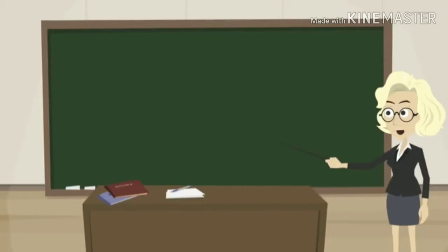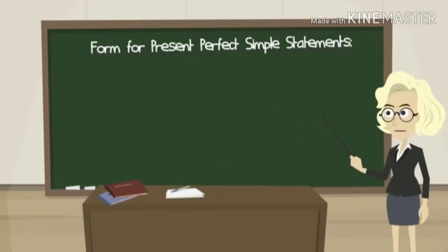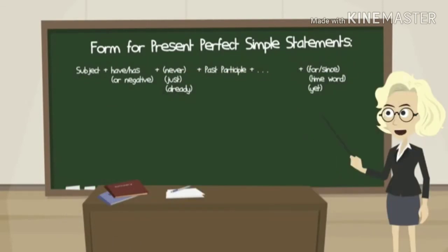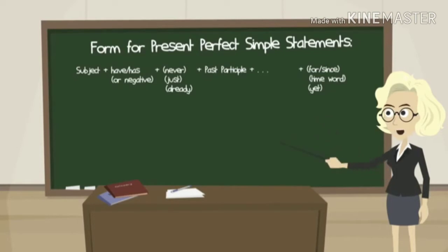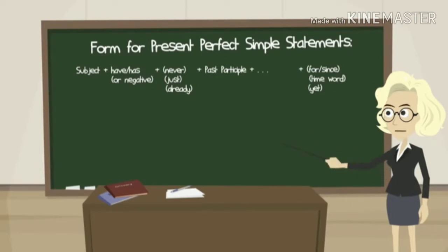Now let's take a look at the form for present perfect simple statements. The form is: subject, plus 'have' or 'has' or their negative form, plus 'never', 'just', or 'already' — these words are optional — plus past participle, plus whatever you want to write, plus 'for', 'since', 'yet', or time words such as 'before', 'recently', and 'lately'. Again, these are optional.